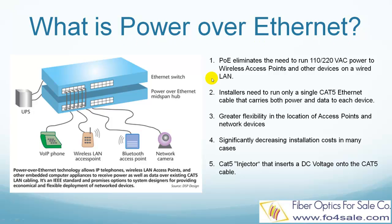Power over Ethernet technology is a system that passes DC electrical power safely along with data on Ethernet cabling. Power over Ethernet eliminates the need to run 110 or 220 AC power to wireless access points and other network devices on a wired LAN.